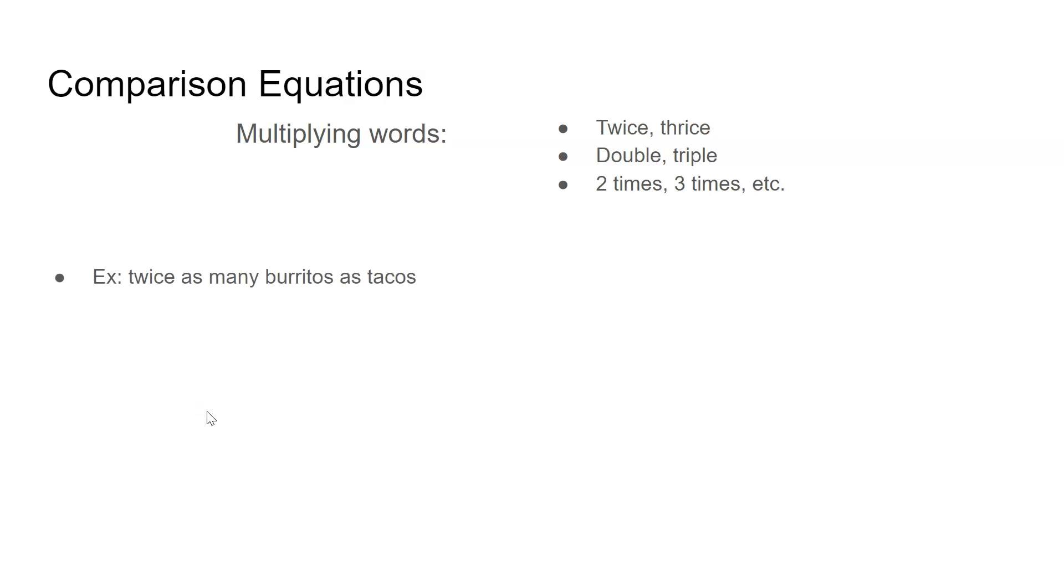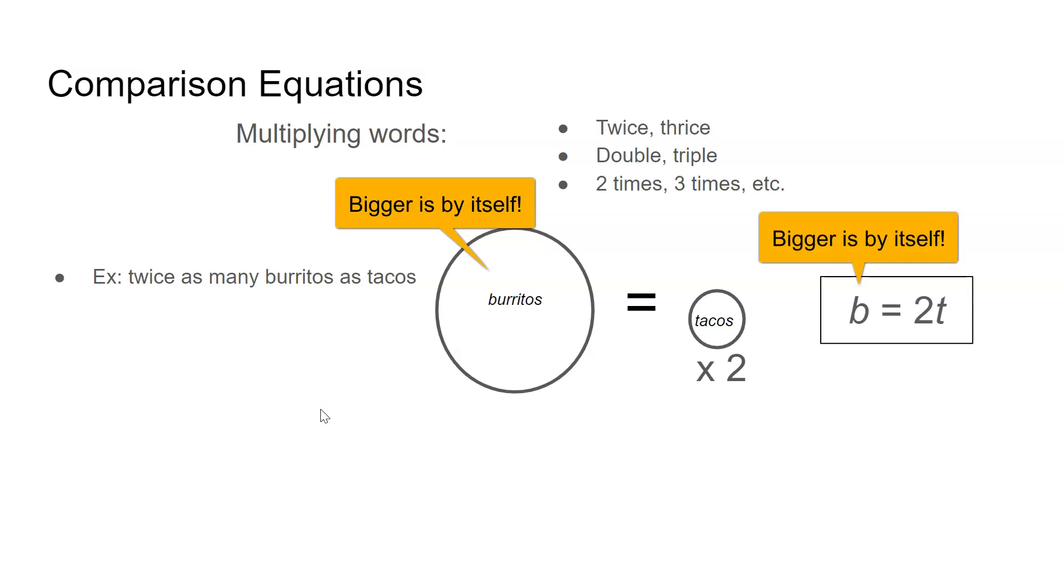For example, twice as many burritos as tacos. If I have twice as many burritos as tacos, burritos is my bigger thing and the tacos would need to grow. Twice is a multiplying word that means multiplying times two. So I would have to multiply the tacos by two in order to make them equal to the burritos. When that translates to an equation, burritos equals two T.